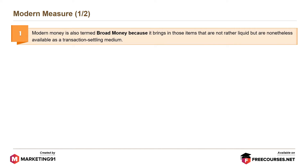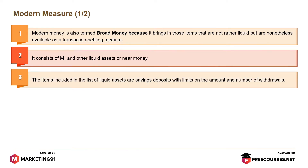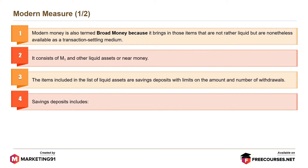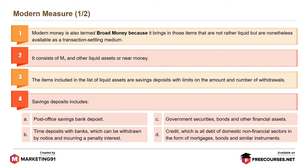Modern money is also termed broad money because it brings in those items that are not rather liquid but are nonetheless available as a transaction settling medium. It consists of M1 and other liquid assets or near money. The items included in the list of liquid assets are: saving deposits with limits on the amount and number of withdrawals, including post office saving bank deposits; time deposits with banks which can be withdrawn by notice incurring a penalty interest; government securities; bonds and other financial assets; and credit, which is all debt of domestic non-financial sectors in the form of mortgages, bonds and similar instruments.